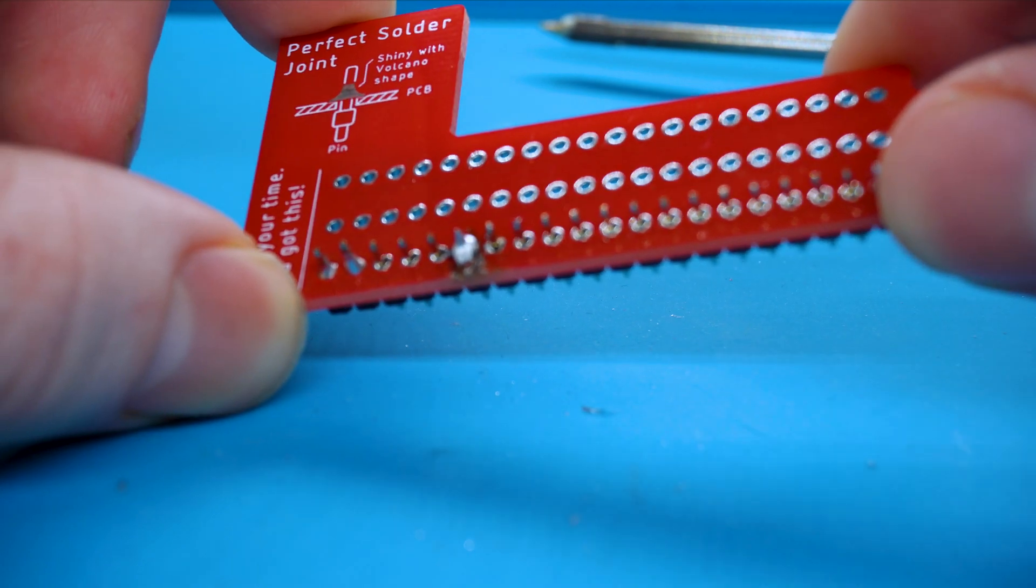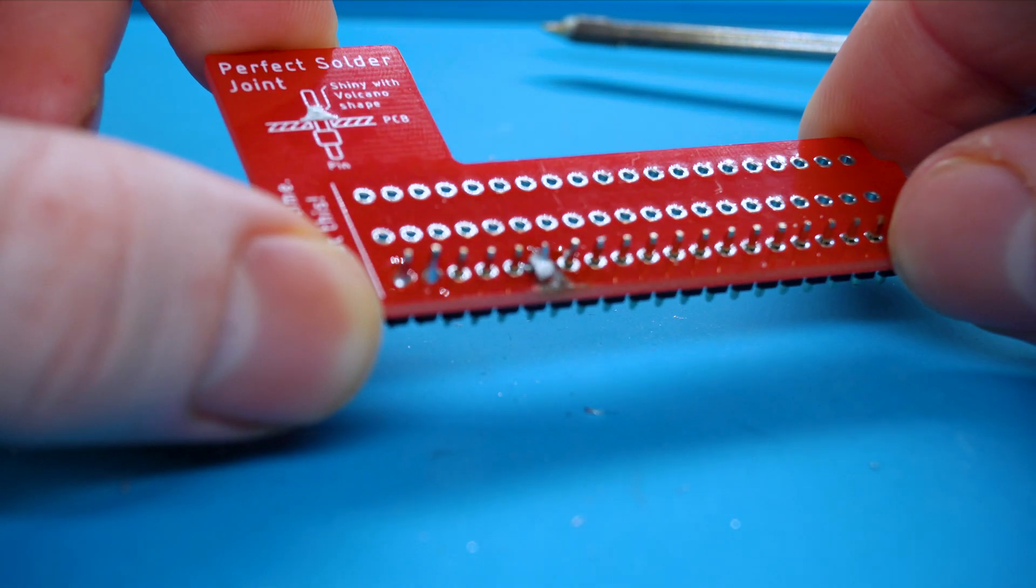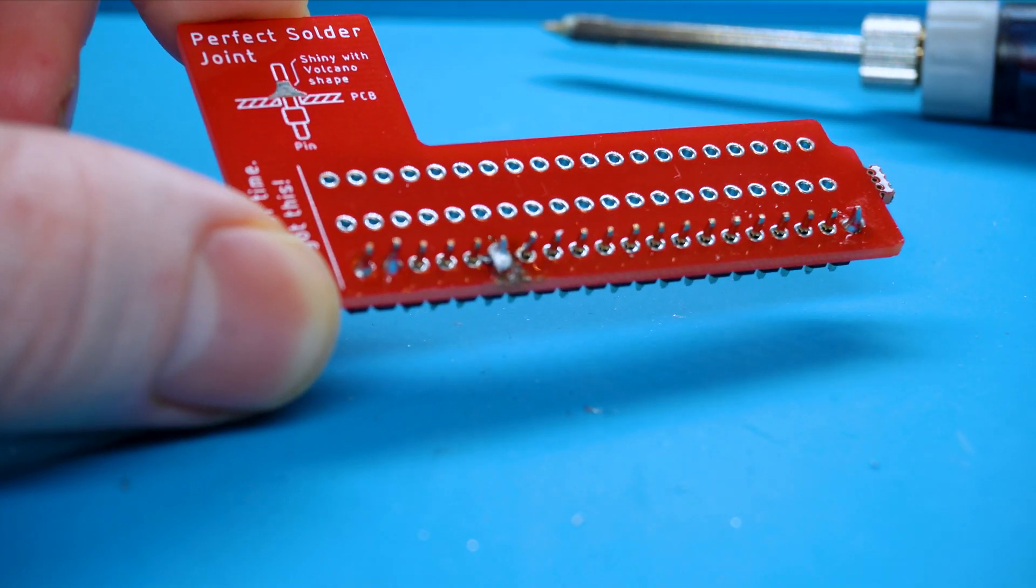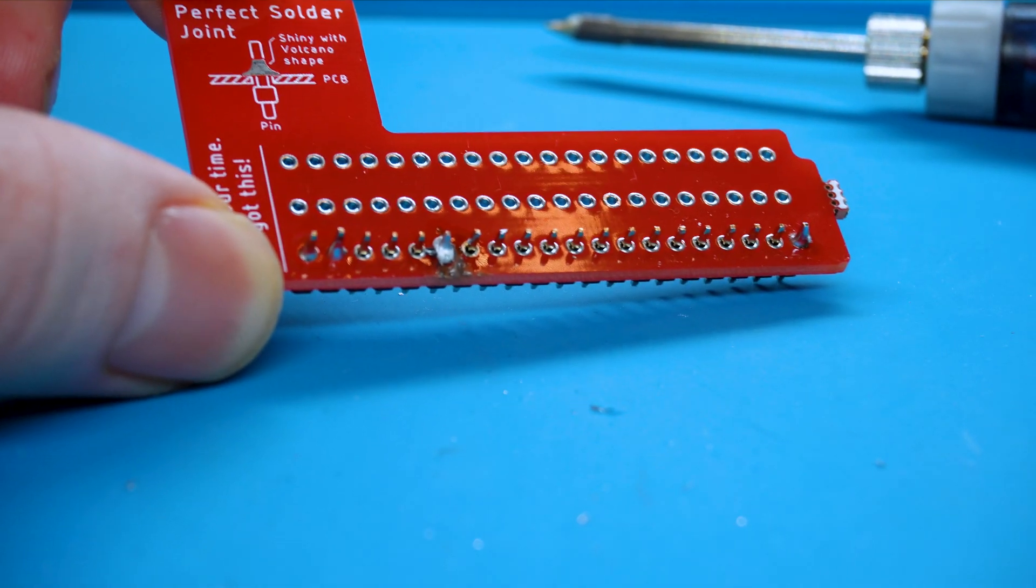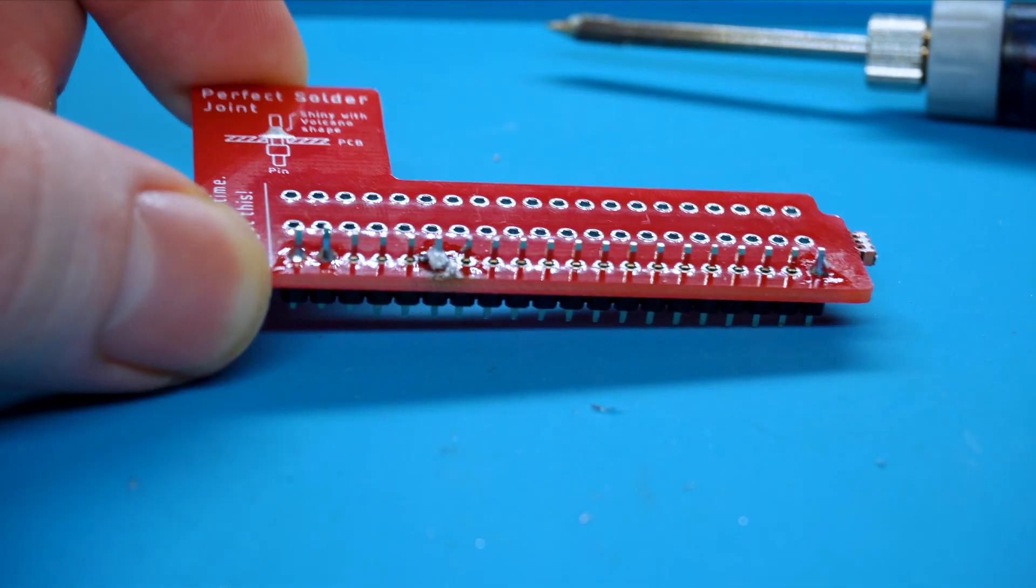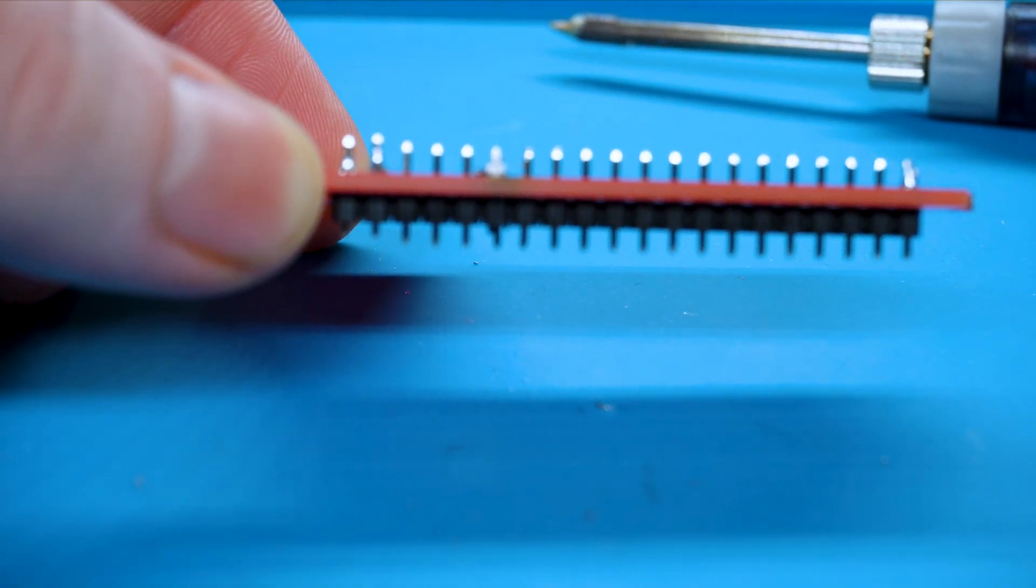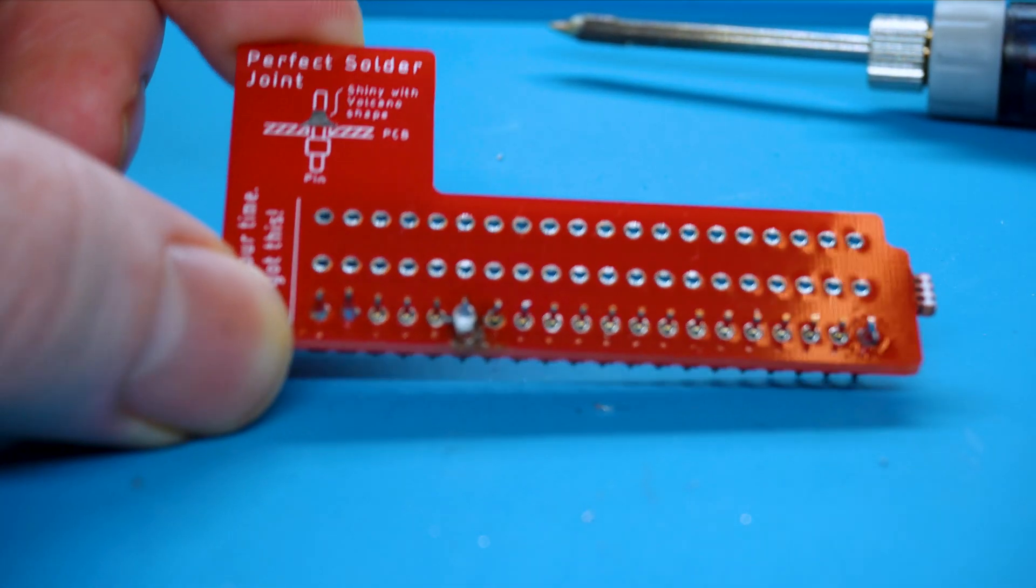The next solder mistake happens when you put the soldering iron on the PCB for way too long and end up burning it. The major indications are black charring of the PCB and when the solder goes from shiny silver to a dull grey like this.